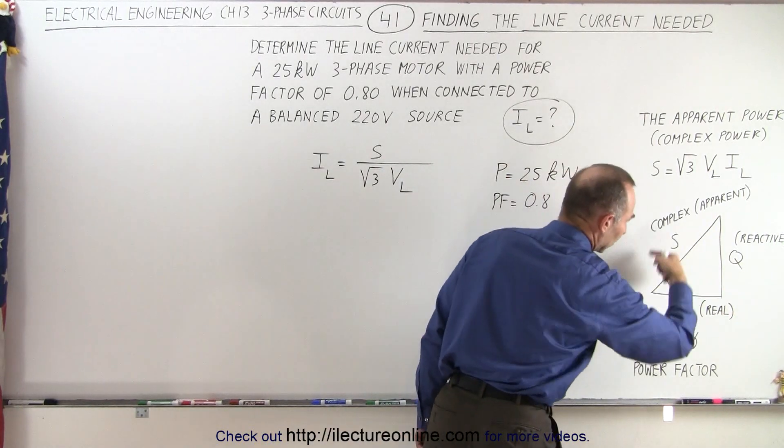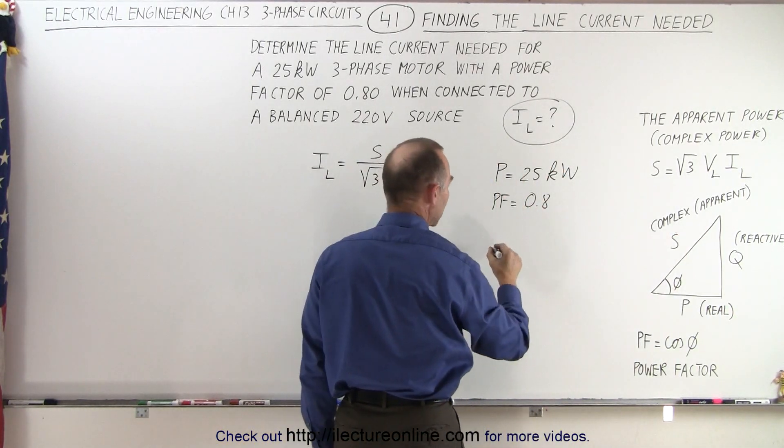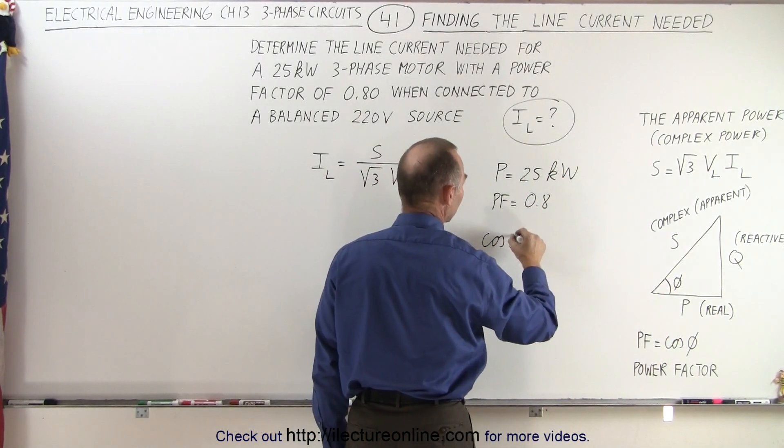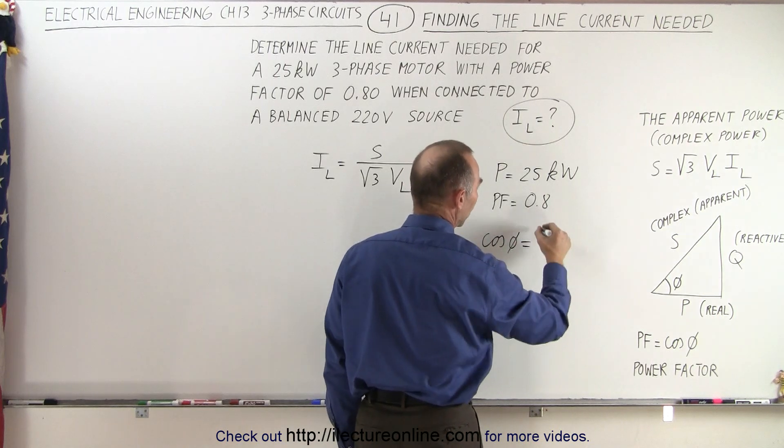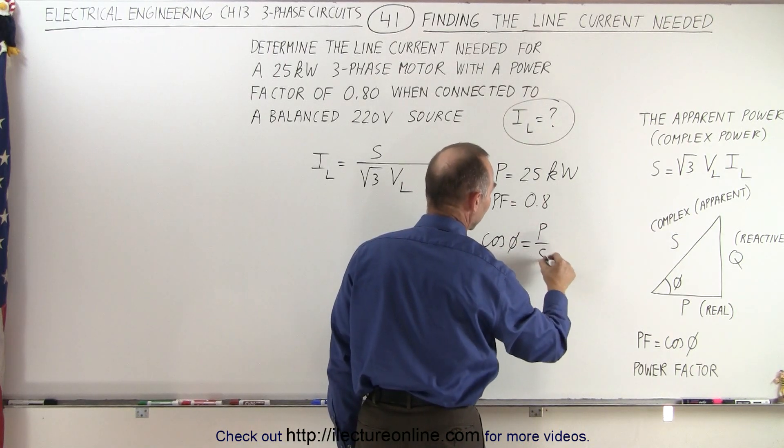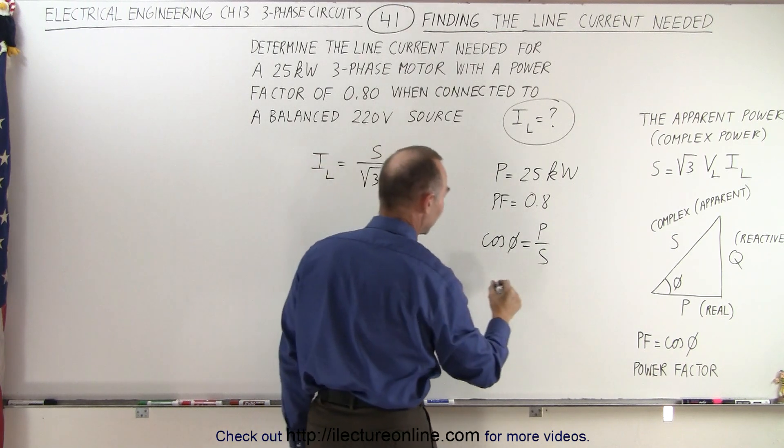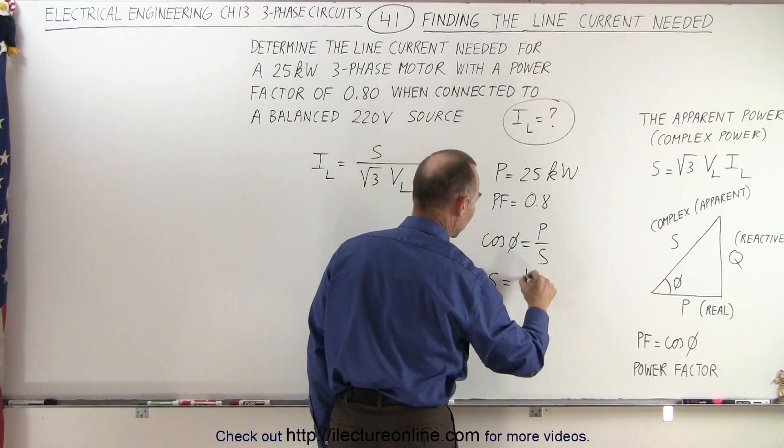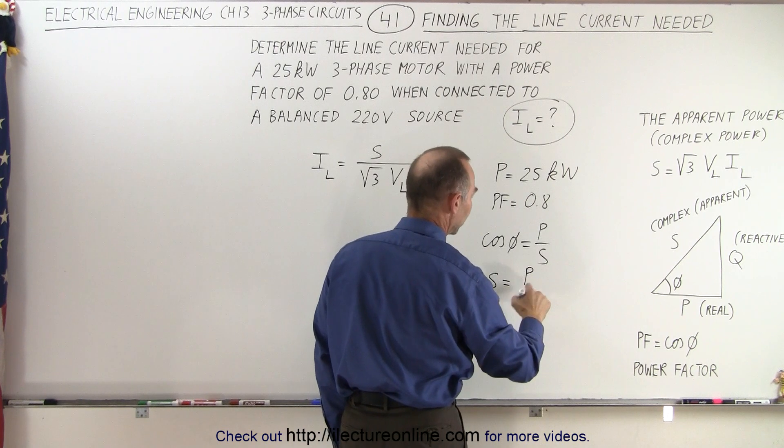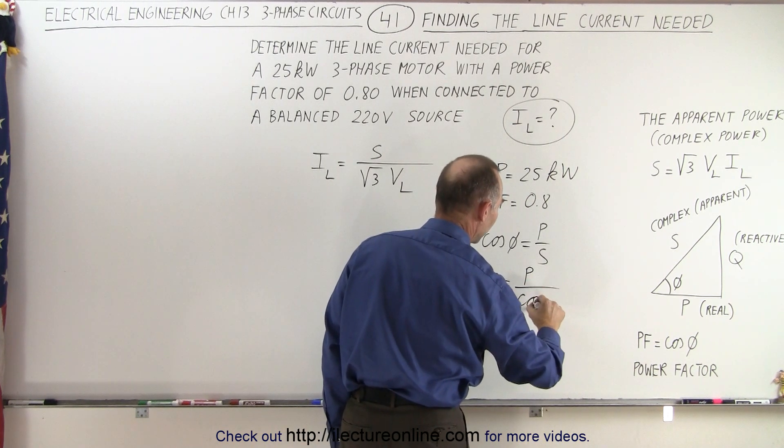From that, we can get the relationship that the power factor, cosine of phi, is equal to the ratio of the adjacent side divided by the hypotenuse. Since we need S, we can write that S equals the power required by the motor divided by the power factor.